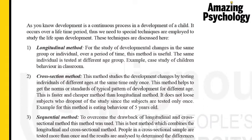The next is the cross-sectional method, found on page 15 of our textbook. This method studies developmental changes by testing individuals of different ages at the same time, only once. The method helps to get the norms or standards of the typical pattern of development for different ages. It is faster and cheaper than the longitudinal method, does not lose subjects who drop out since subjects are only tested once. An example is eating behaviors in five-year-olds.